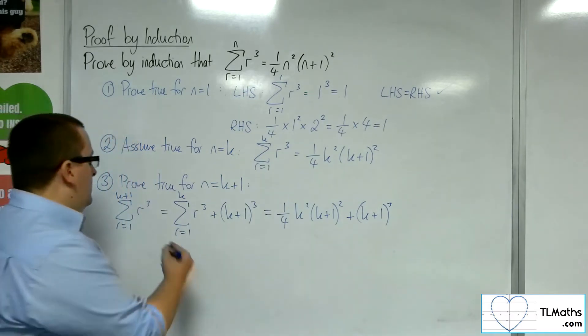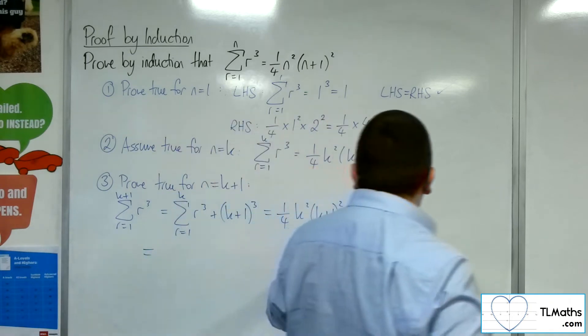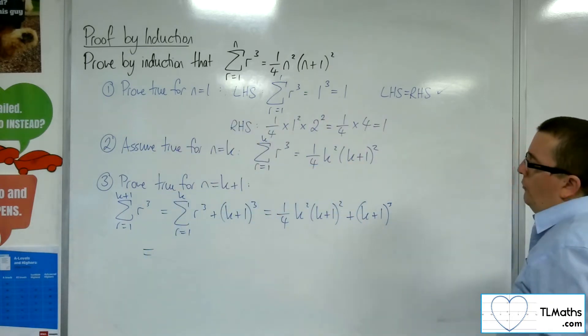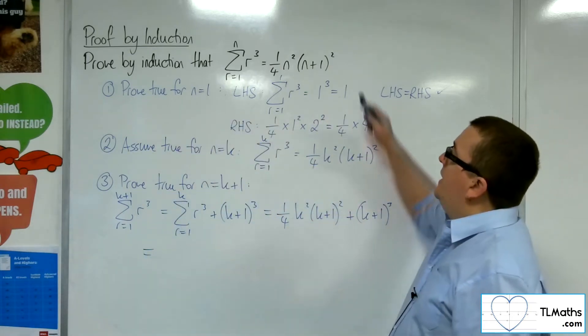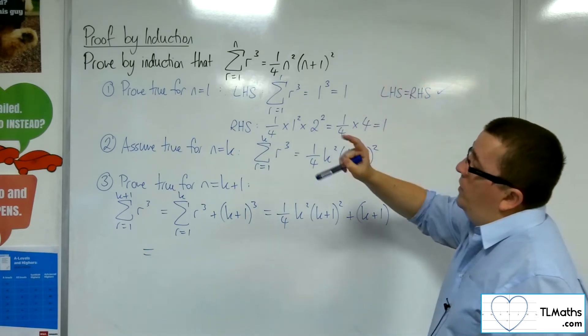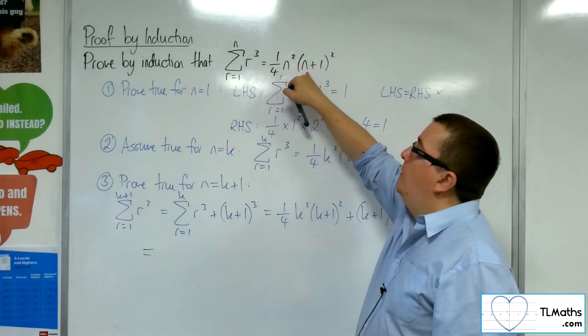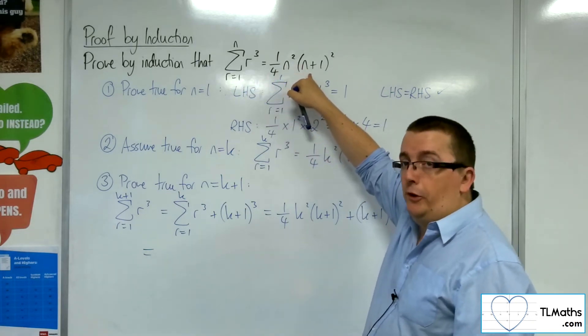So what do I want to do from here? Well, my target, my goal here, is to make sure that I can factorise that into a form where I get it identical to this, but with the n replaced with k plus 1. So what I should end up with is 1 quarter times k plus 1 squared times k plus 1 plus 1, so k plus 2 all squared.